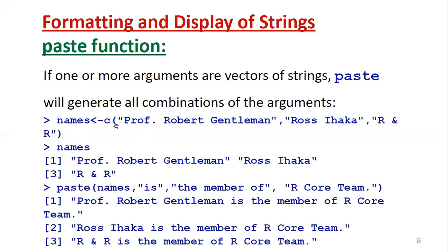For each name in the vector, that name is concatenated with all three strings. So Professor Robert Gentleman is concatenated with the strings, then Ross Ihaka is concatenated with the same strings, then R and R is concatenated with those strings. Each name generates one output combined with the provided sentence. Every time, these strings are concatenated with all the names stored in the vector. Whatever names are stored in the vector — if one or more arguments are vectors of strings — the paste function will generate all combinations of the arguments.